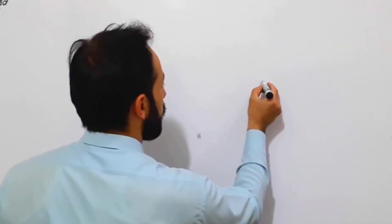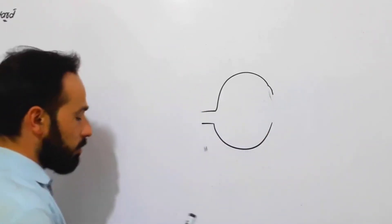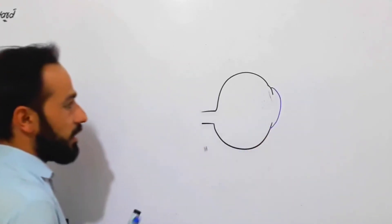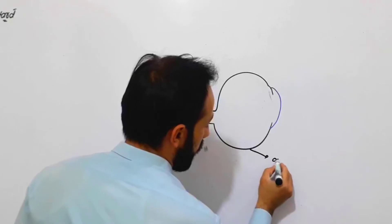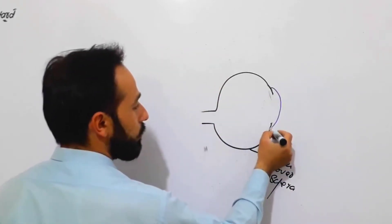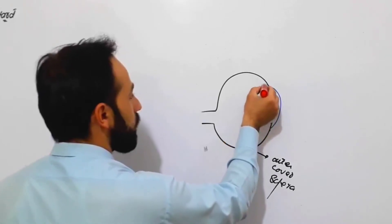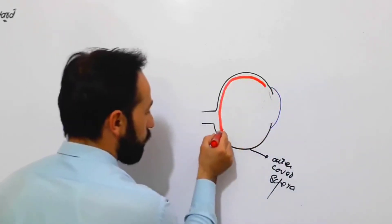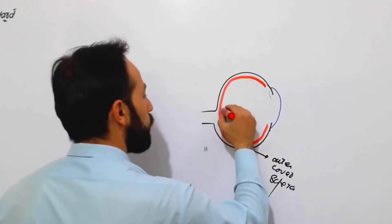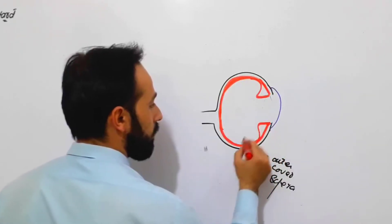Let me recap the previous lecture briefly. Our eye has three covers. The outer cover is called the sclera and the cornea — anteriorly the sclera is discontinuous and has an anterior bulging part called the cornea, which we discussed in the previous lecture. Beneath the sclera we have a vascular layer called the uveal tract, which is divided into three sub-parts.